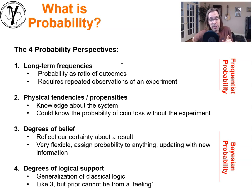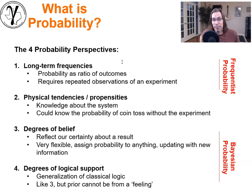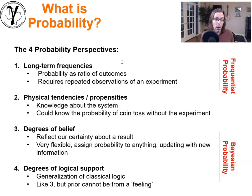This frequentist approach requires repeated observations of an experiment. In the purest form, frequentist probability doesn't actually exist outside of the experiment — you only have that probability for the samples you ran the experiment on. In practice, we relax that: we ran an experiment, we have an observation, and we'll use that probability elsewhere. We'll assume stationarity — we'll get into those terms later — but we'll relax things a bit.